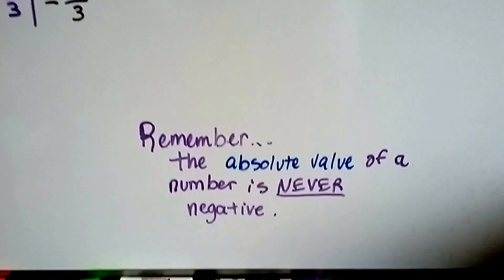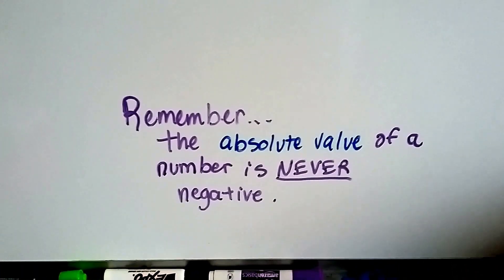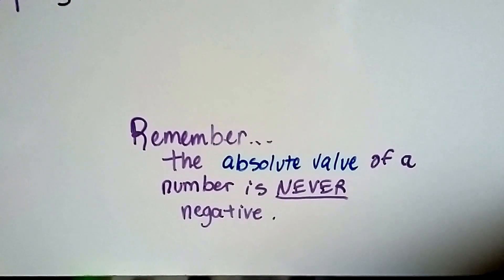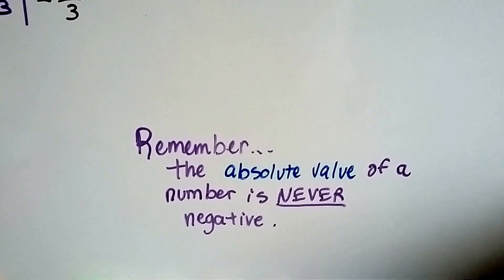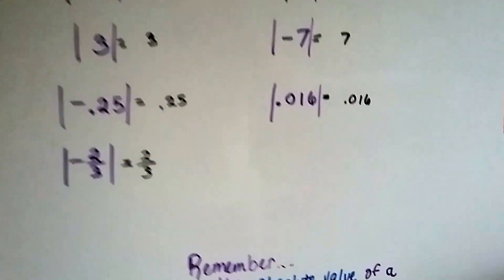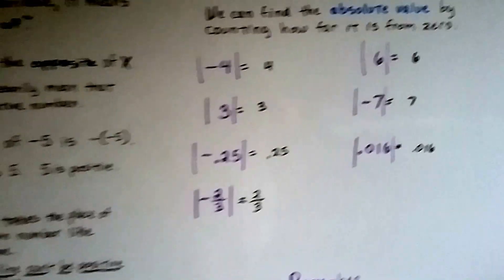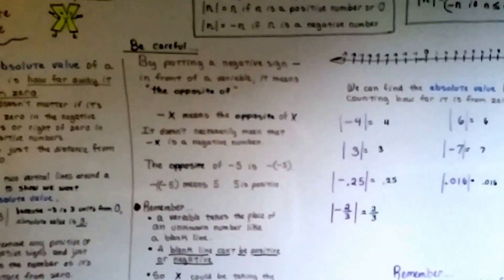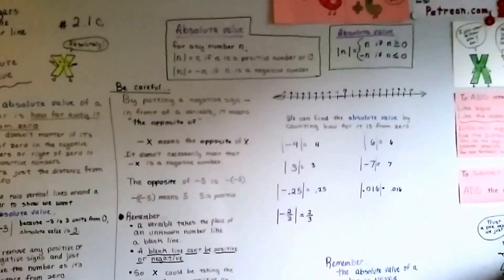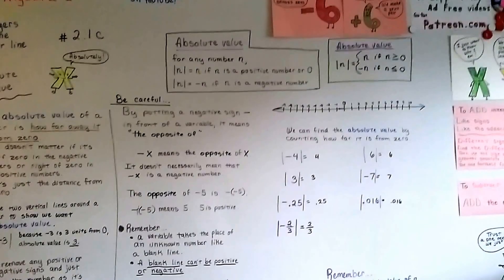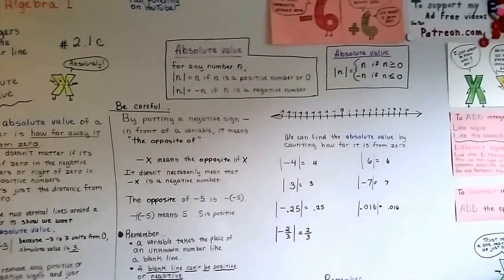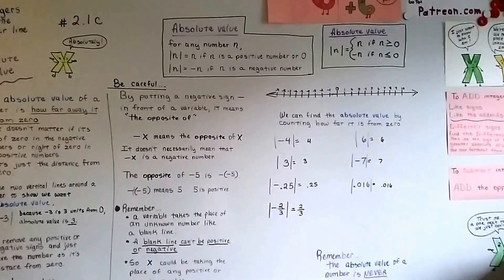Remember, the absolute value of a number is never negative. It's just a distance from zero, and you can't have a negative distance — it wouldn't make sense. So that's absolute value. Absolutely! And we're going to talk about rational numbers in our next video. I hope to see you there. That'll be 2.2a.